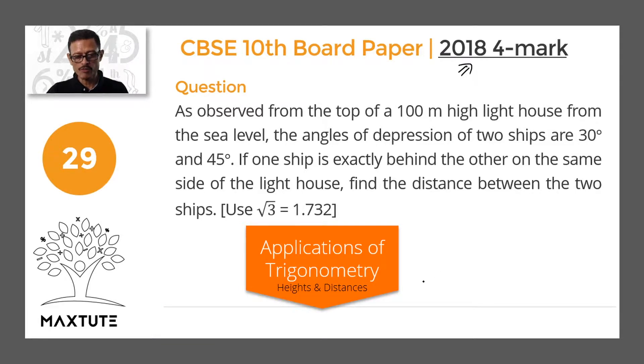As observed from the top of a 100 meter high lighthouse from the sea level, the angles of depression of two ships are 30 degrees and 45 degrees. If one ship is exactly behind the other on the same side of the lighthouse, find the distance between the two ships. Use root 3 equals 1.732.